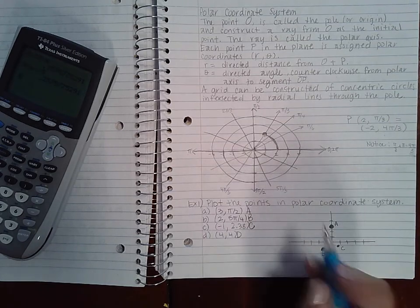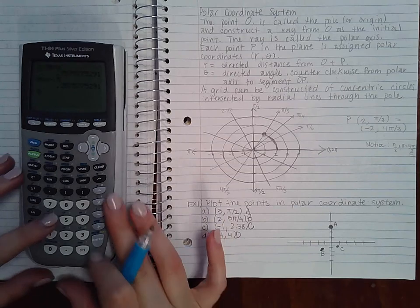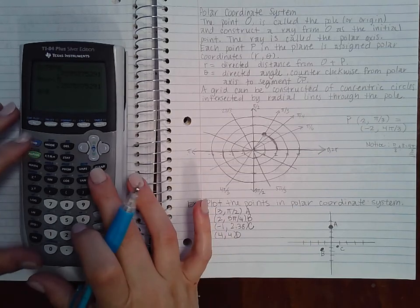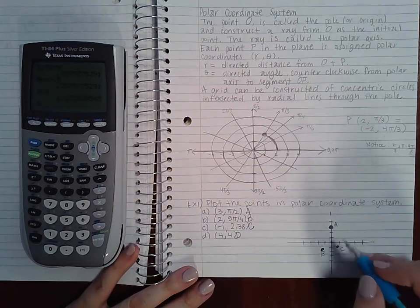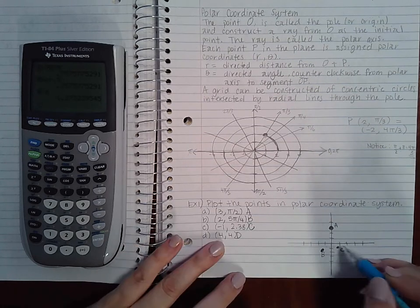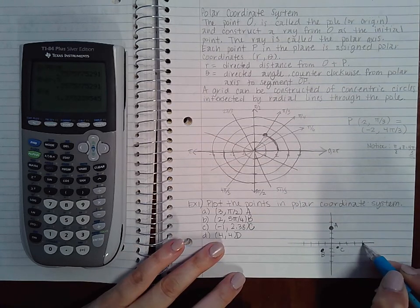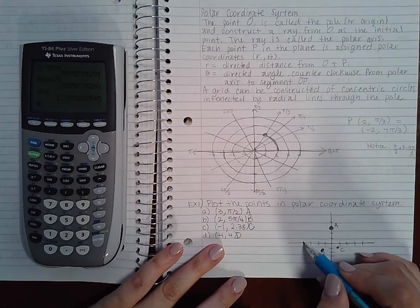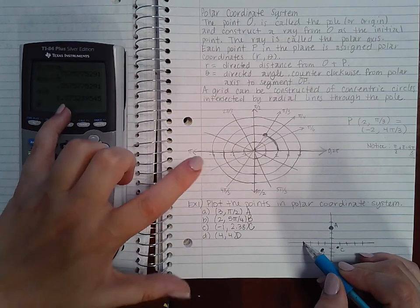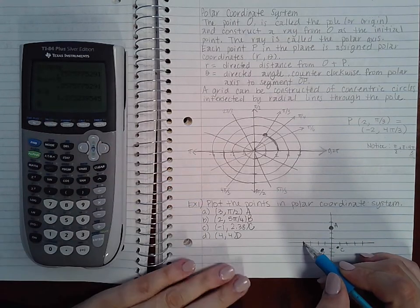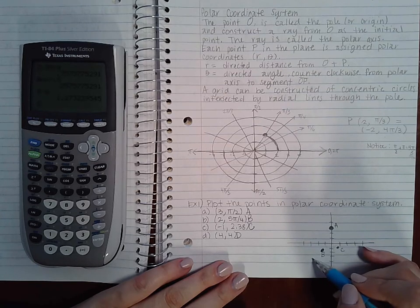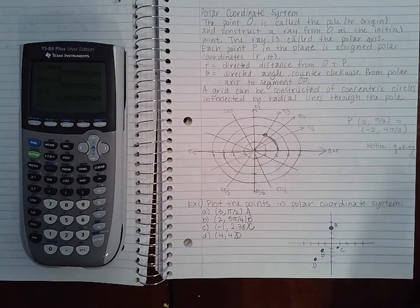Then for D, it's four and four. So four divided by π is about 1.2π. So if I go up four, 1, 2, 3, 4, and I go one whole π unit, and then about a little bit more than a fourth of a π. So maybe just a little bit more than a fourth more. So this would be the point D.